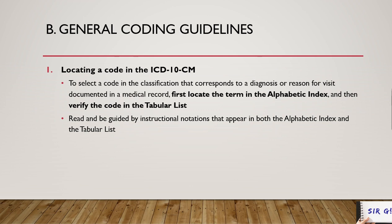The term you will locate is usually the condition — I usually call this the main term, because those main terms will lead you to the correct ICD-10-CM code. For example, if the diagnosis is aspiration pneumonia, the main term is 'pneumonia.' You go to the alphabetic index under the letter P, find pneumonia, then move down to find the sub-term 'aspiration' and the code listed beside it.